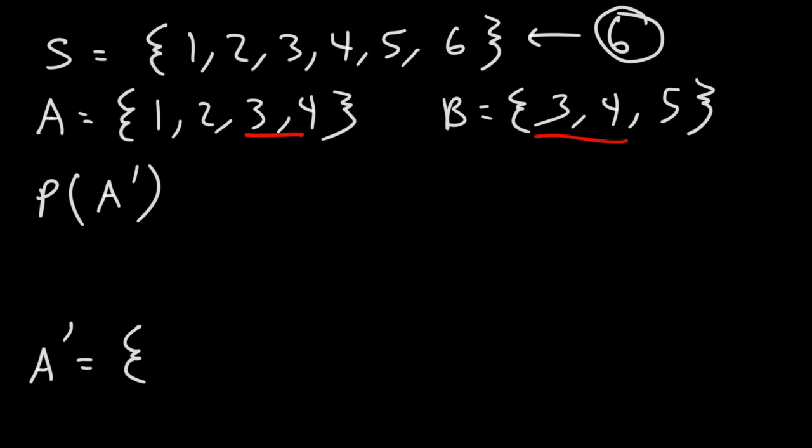So this includes everything that is not A. So out of our sample space of one to six, A is one to four. So the other numbers that are not in A but still in our total sample space are the numbers five and six. So the probability of getting the complement of A is going to be two, we have two favorable outcomes out of a total of six, which is going to be one over three.